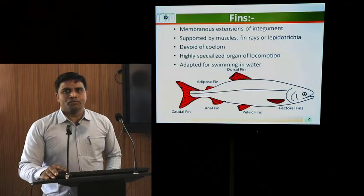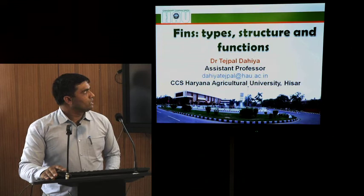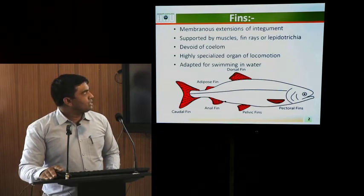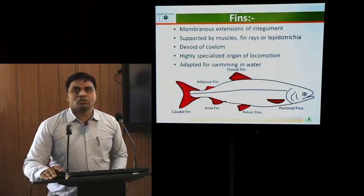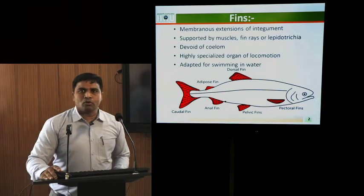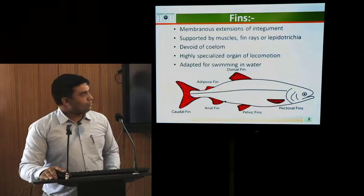Dear student, welcome all of you in the e-learning session. Today we will discuss fins, types, structures and functions. Fins are membranous extensions of integument. These are supported by muscles and fin rays, which are also called as lepidotrichia. These are devoid of siloam and are highly specialized organs of locomotion. These are adapted for swimming in water in fishes.